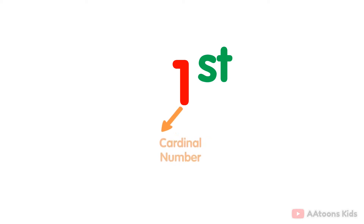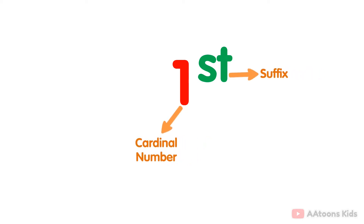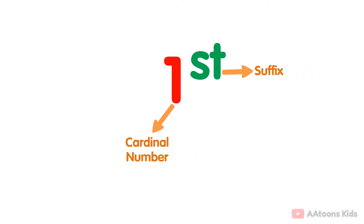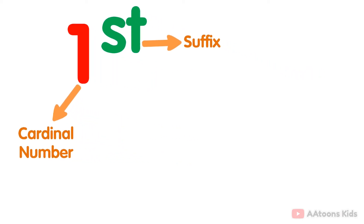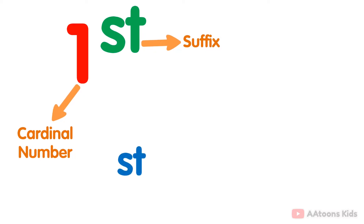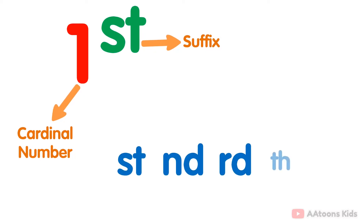In English, ordinal numbers are formed by adding a suffix to the cardinal number, typically ending in st, nd, rd, or th.